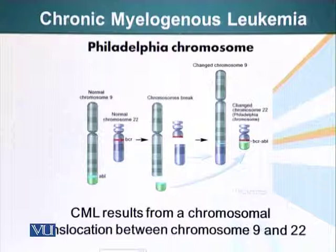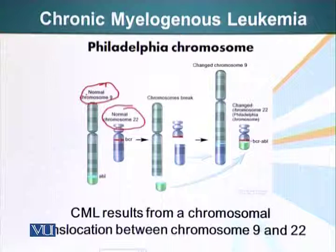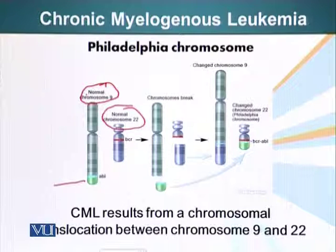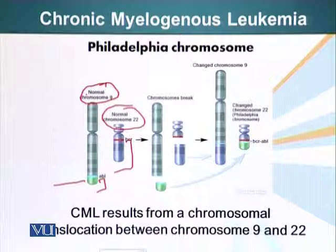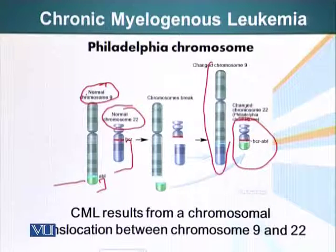Chronic myelogenous leukemia. In this disease there's a translocation between normal chromosome number 9 and chromosome number 22. We know what a translocation is. The end result is that there is a changed chromosome 9 and a changed chromosome 22. This changed chromosome 22 is basically also called the Philadelphia chromosome.